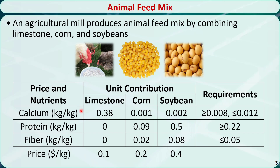Here are the nutrition facts. 1 kg of limestone contains 0.38 kg of calcium, 0 kg of protein, and 0 kg of fiber. For 1 kg of corn, these values are 0.001, 0.09, and 0.02. For 1 kg of soybeans, these values are 0.002, 0.5, and 0.08.